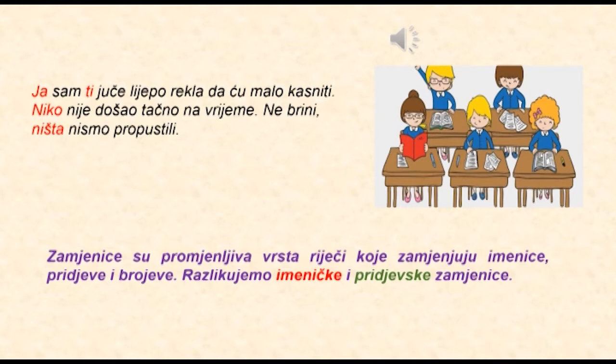Obratite pažnju na sljedeće rečenice: Ja sam ti juče lijepo rekla da ću malo kasniti. Niko nije došao tačno na vrijeme. Ne brini, ništa nismo propustili. U ovim rečenicama zapažamo obraćanje licu, biću bez imenovanja, kao i upućivanje na određene imeničke pojmove, i to se postiže zamjenicama.